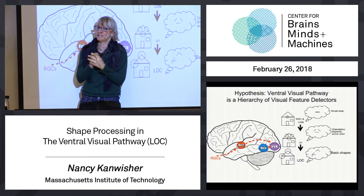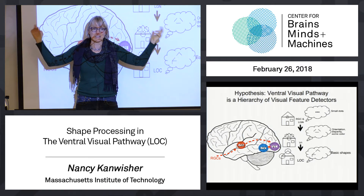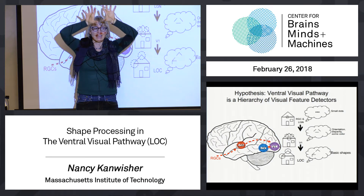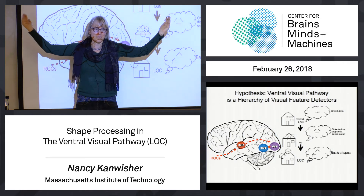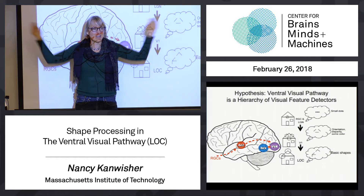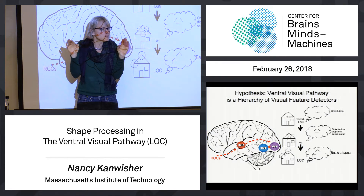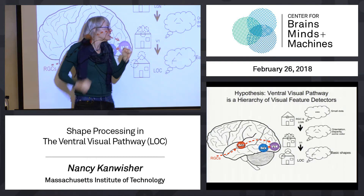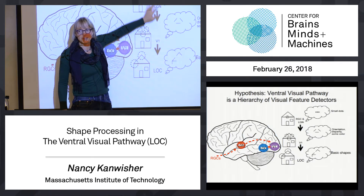The reason these cells prefer small dots rather than uniform illumination is that they have inhibitory surrounds in their receptive fields. If you show them a big open expanse of light or dark, they don't respond strongly. They care about things that differ from their surroundings — either brighter or darker. So small dots are what these cells are sensitive to.